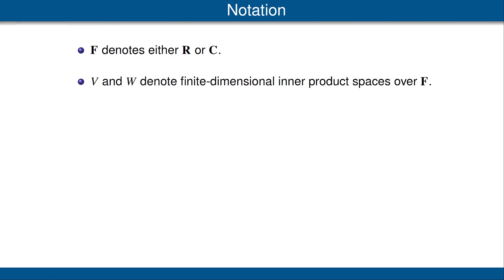Let's quickly go over what will be our standard notation until further notice. F denotes either the scalar field of real numbers R or the scalar field of complex numbers C. Also, we will let V and W both denote finite dimensional inner product spaces over F. Notice the new assumption that V and W are finite dimensional. That will be required for our next set of results, and it's easier just to make that a standing assumption than to repeat that hypothesis in each result.